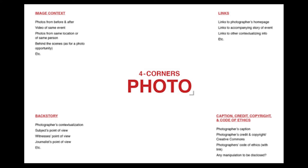The bottom left corner of every image would be the backstory — the photographer, a witness, the subject speaking about what really happened around the image, before, during, and after. The upper left is image context — maybe the image before and after, a video of the scene, or for example the World Press winner of the little child at the barbed wire: ten years later, what did they grow up to do? The upper right is links to other stories — articles, Wikipedia, videos explaining more about the situation.